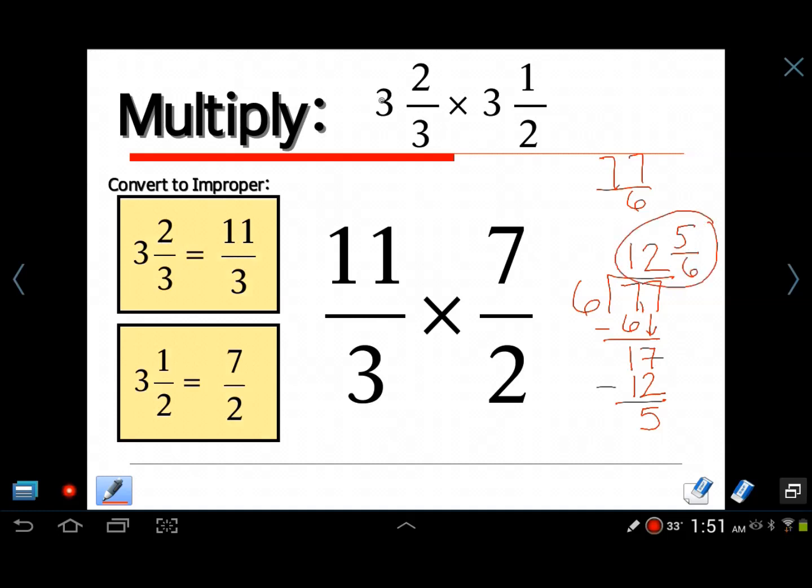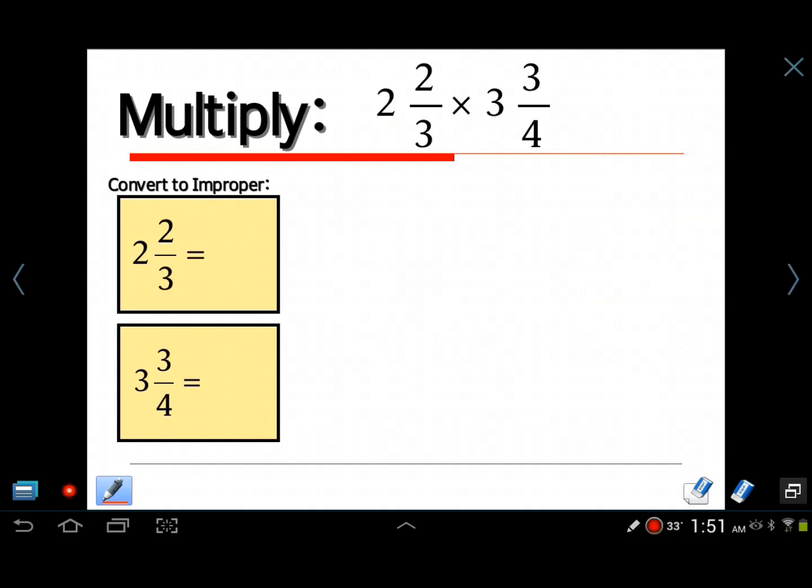So you can see doing the shortcut didn't work. We could not do that. 3 times 3 is 9 and 2 thirds times 3 halves is 2 sixths. That does not work at all. Here's our next problem: 2 and 2 thirds times 3 and 3 fourths. Our first step is to convert anything that's a mixed number into improper. 2 and 2 thirds equals 8 thirds. 3 and 3 fourths equals 15 fourths. So that was our first step. We changed these things into improper fractions. Do you have to do that? Yes. You better do that every time. Don't take the shortcut. It doesn't work.